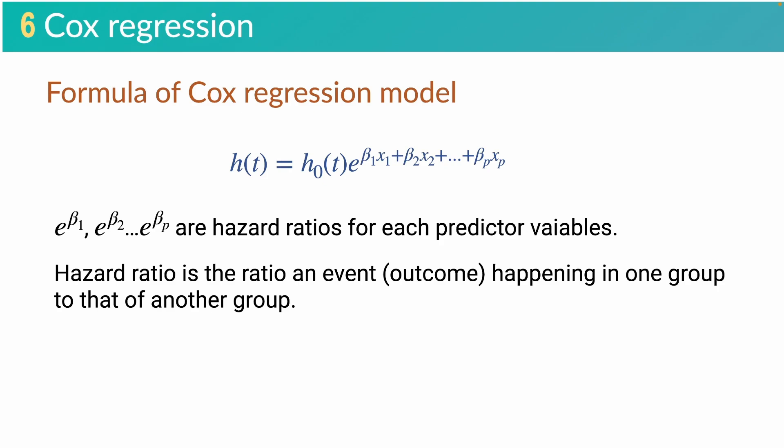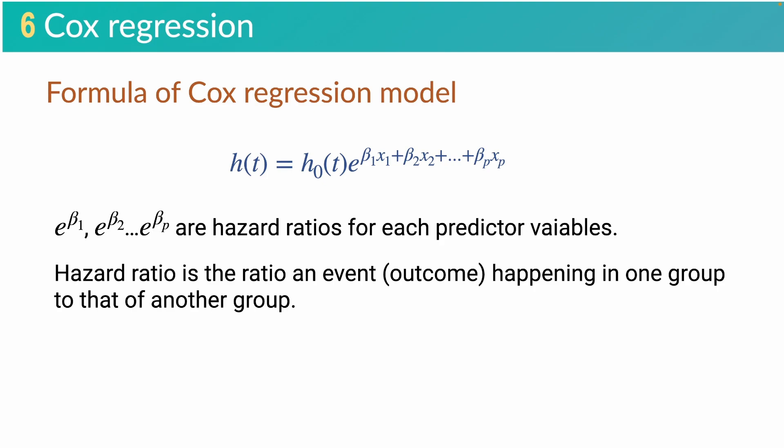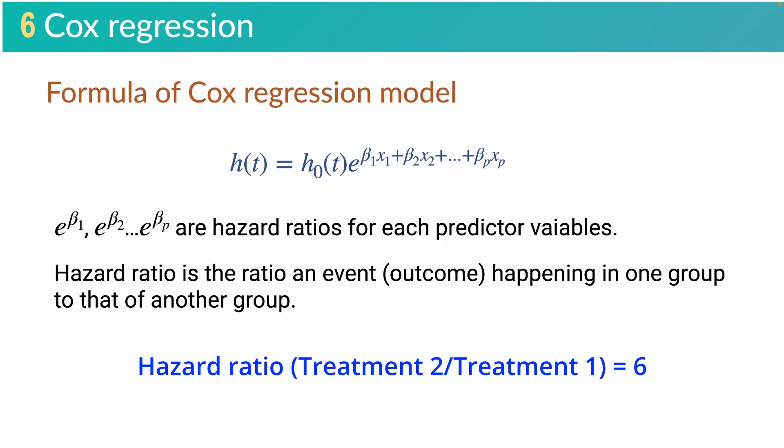E to the power of beta are hazard ratios for each predictor variable. Hazard ratio is defined as the ratio of an event or outcome happening in one group to that of another group. For example, a hazard ratio of 2 for smokers means the chance of an individual dying from lung cancer is twice as high if he is a smoker compared to a non-smoker. Or, a hazard ratio of 6 for patients treated by method 2 compared to method 1 means the chances of a patient dying are 6 times higher if treated with treatment 2 compared to treatment 1.